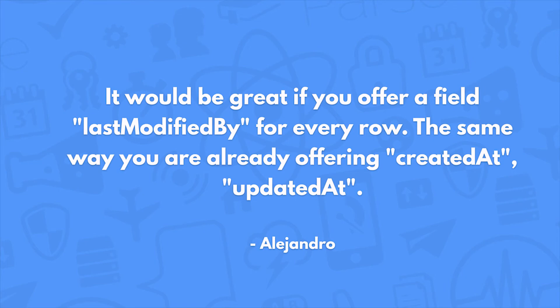It would be great if you offered a "last modified by" field for every row, the same way you're already offering created at and updated at. That's an interesting feature. For today, you can do it using the before save hook. Basically, check if request.user is not nil, and then update the last modified by field. That's probably the best way to go.